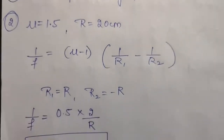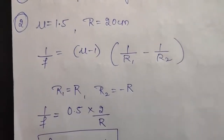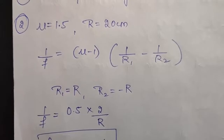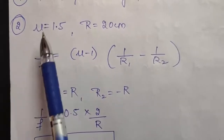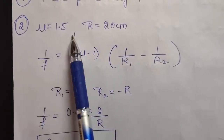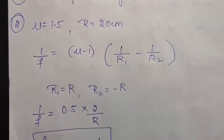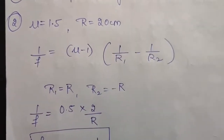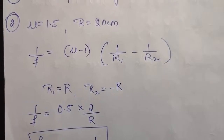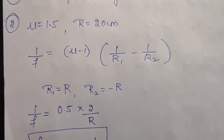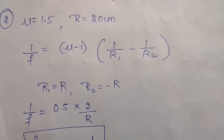In the second question, it is given that a double convex lens made of glass of refractive index 1.5 and radius of curvature 20 centimeters. Now if incident light rays are parallel to the axis of the lens are converging at a distance d, you have to calculate that d.